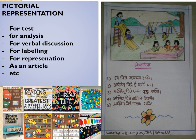There should be a connectivity between what we are making them do and what we have taught them. This activity can be taken as a test, and we can also have a verbal discussion of the pictorial representation. We can ask them to label, write an article, or write an essay. This can be done not only in languages but also in other subjects — for example, a diagram of the heart or the transverse section of a leaf, and asking them to write a paragraph on that.